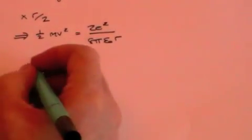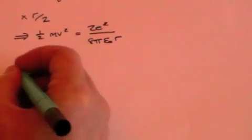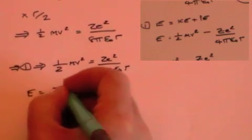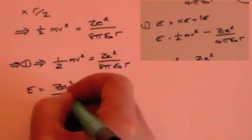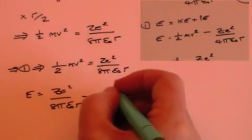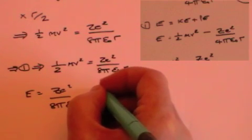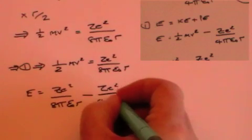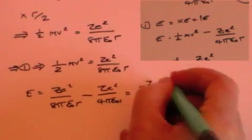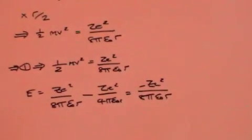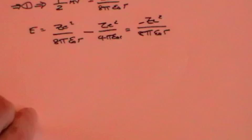And we can substitute that value for half m v squared into the first equation, where energy is half m v squared, which we now know is z e squared divided by 8 pi epsilon naught r minus the Coulomb term, which is z e squared over 4 pi epsilon naught r. And that's a fairly easy piece of math. That's just minus z e squared over 8 pi epsilon naught r.